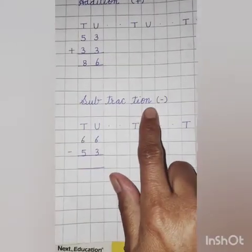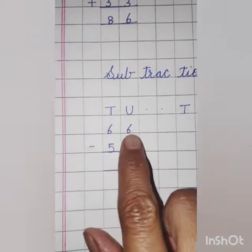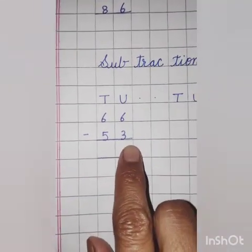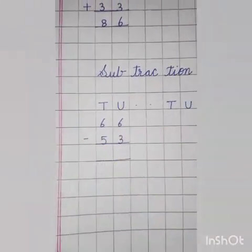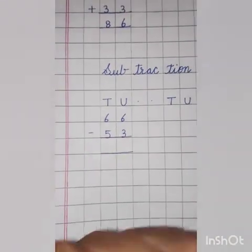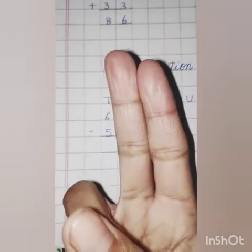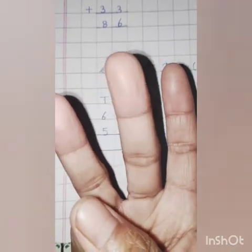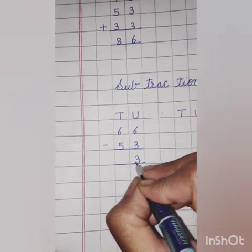Subtraction means minus. Units and tens: 66 minus 53. First we will solve the units side. 6 minus 3 — throw 3, count till 6. What comes after 3? 4, 5, 6. How many fingers are left? 1, 2, 3. So the answer is 3.